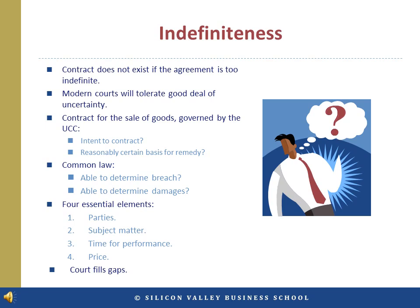Even though two parties may intend to make a contract and believe they have made a contract, the contract does not exist if the agreement is too indefinite. However, modern courts will tolerate a good deal of uncertainty before voiding a contract for indefiniteness. A contract for the sale of goods governed by the UCC is valid if the parties intended to make a contract and there is a reasonably certain basis for giving an appropriate remedy. Contracts for services governed by the common law are sufficiently definite if the court is able to determine whether one party has breached and is able to award some form of reasonable damages. The four essential elements necessary are identification of the parties, the subject matter of the contract, time for performance, and price. The court will look to the common law and UCC to provide any missing terms.